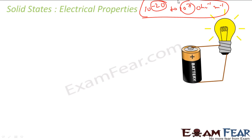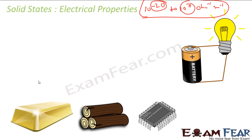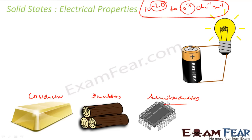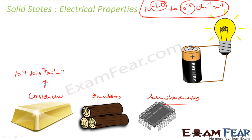The range is 10 to the power minus 22 to 10 to the power 7. There are three types of solids based on conductivity: conductors, insulators like wood, and semiconductors like silicon used in transistors. Conductors typically have a conductivity range of 10 to the power 4 to 10 to the power 7 per ohm per meter.